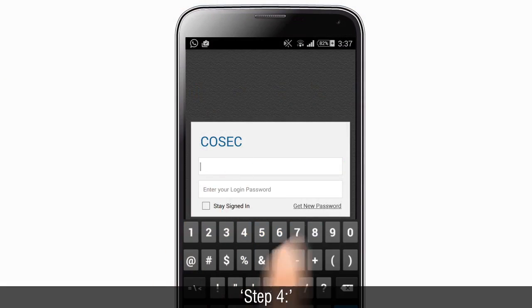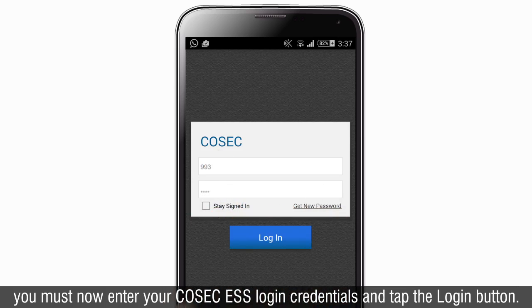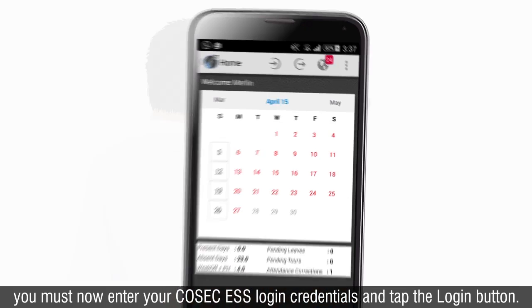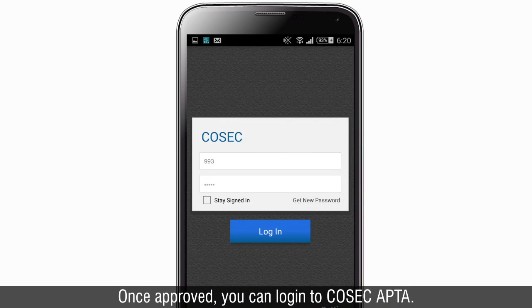Step 4: You must now enter your Cosec ESS login credentials and tap the login button. A device registration request shall be sent to Cosec. Once approved, you can log in to Cosec Apta.